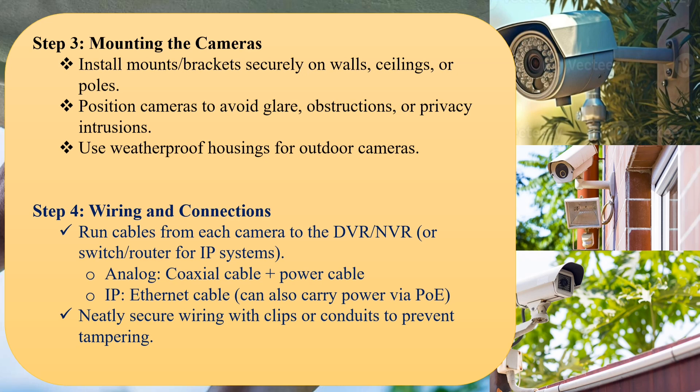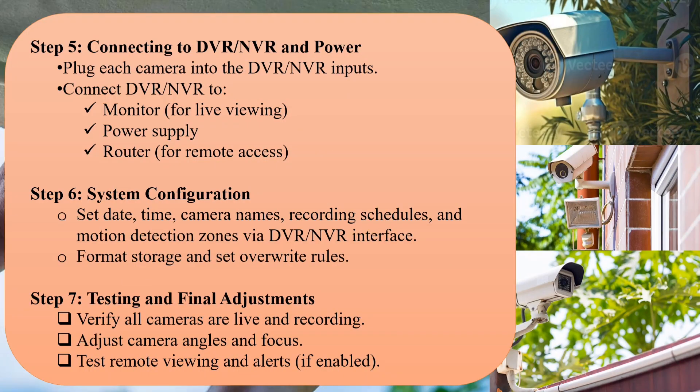Connect the cables to the DVR or NVR at the respective monitoring station — whether that's a bedroom, or a control room in a company. For the cabling through cable enclosures, make sure it looks neat, is not visible, and is not reachable to persons with wrong intentions. But also ensure that a technician can access the wiring for easy maintenance, along with a wiring diagram.